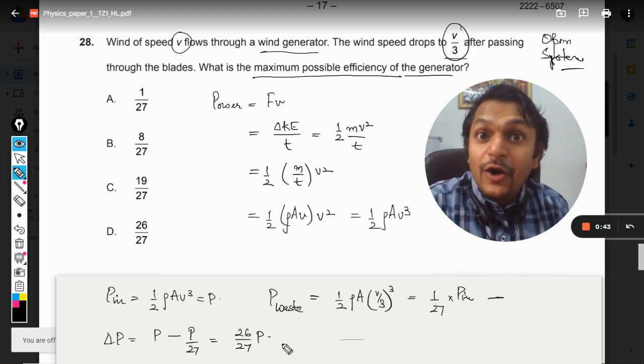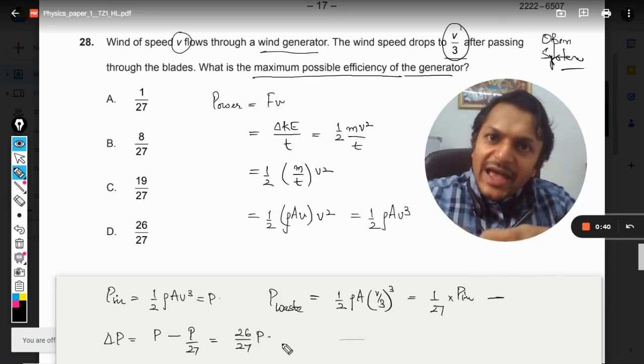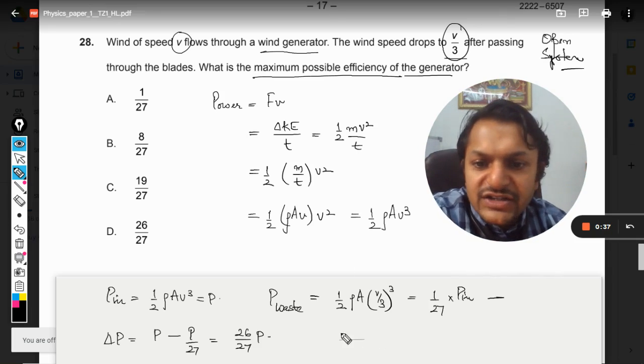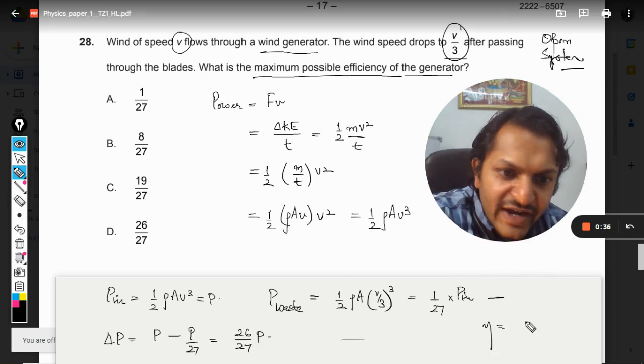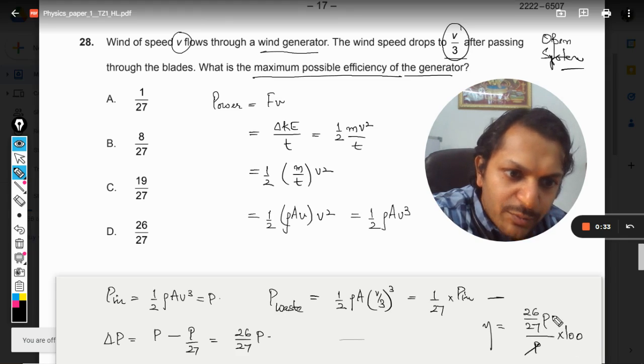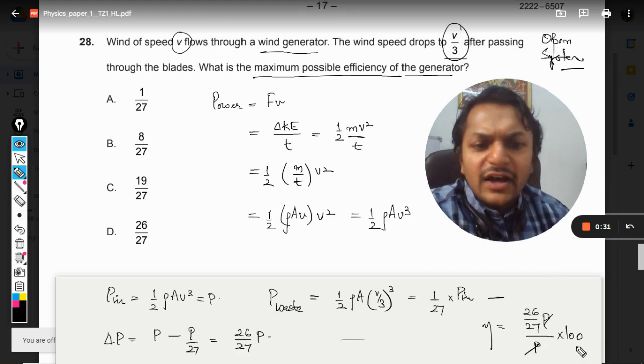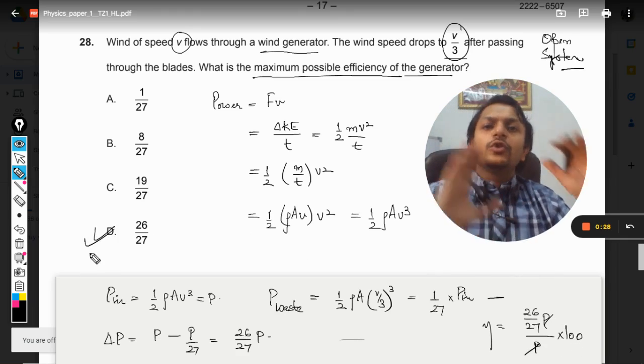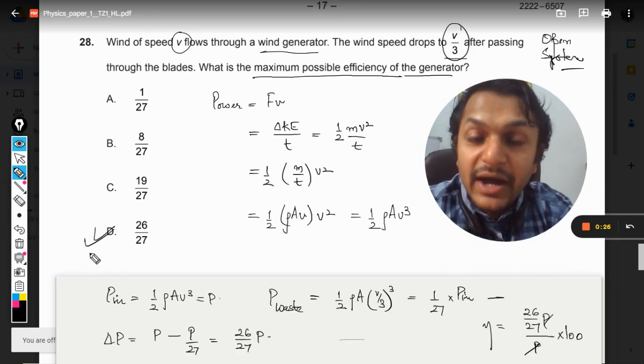Now we need to find the efficiency. Efficiency is defined as power output divided by power input times 100. P gets cancelled with P, and we can remove 100. So our answer for this question is 26/27.